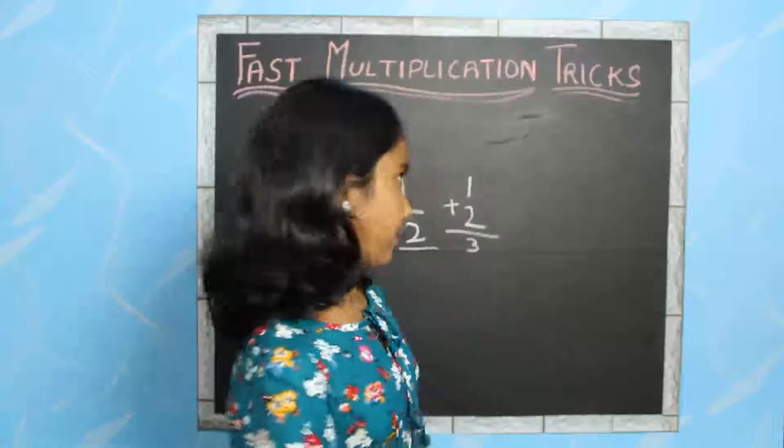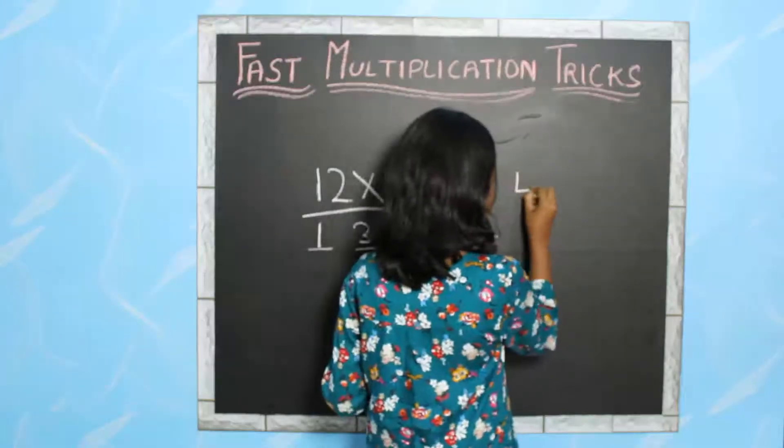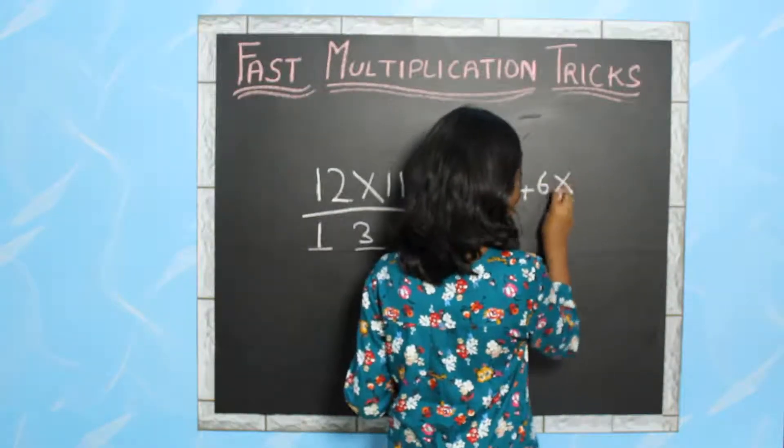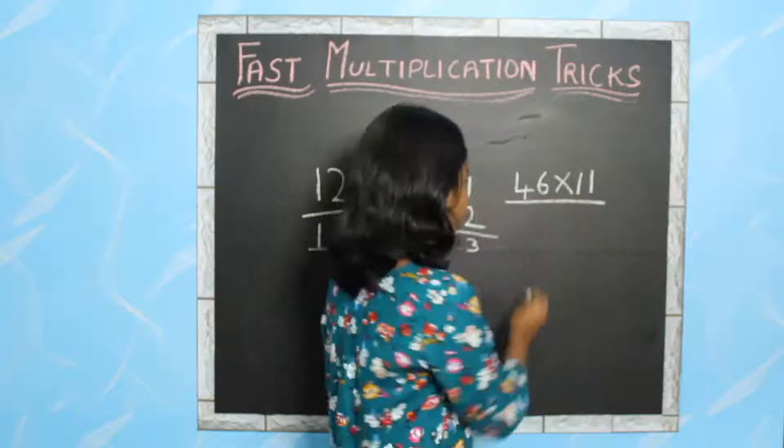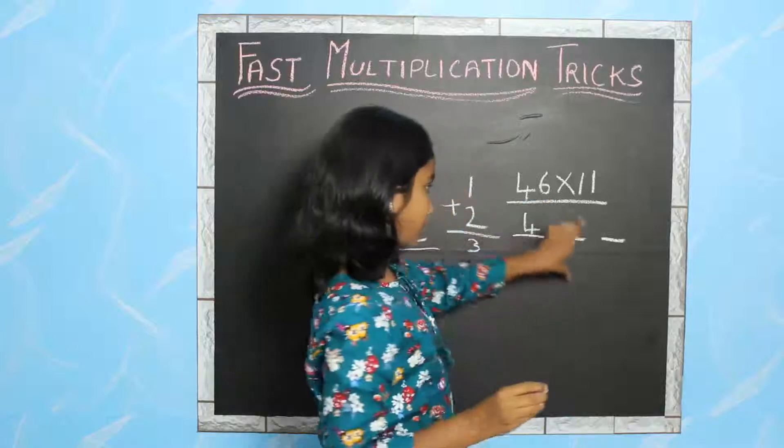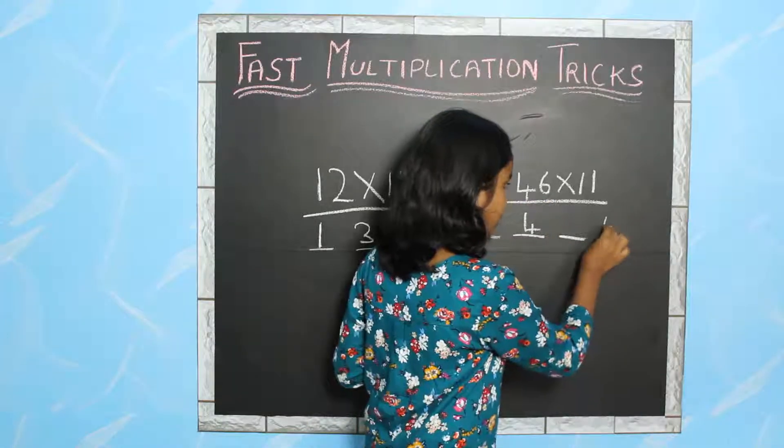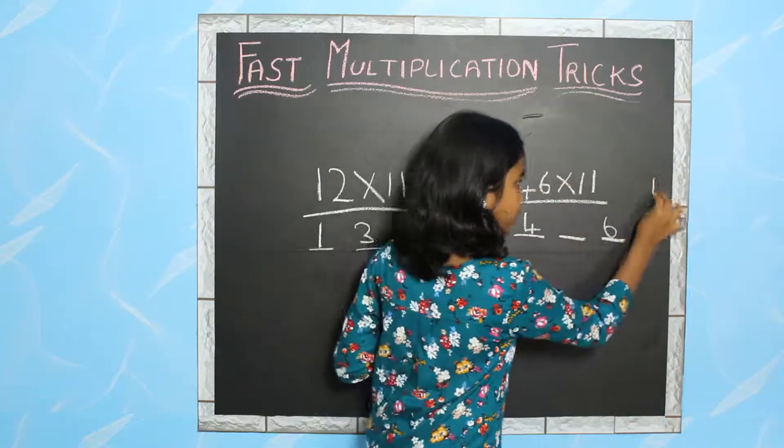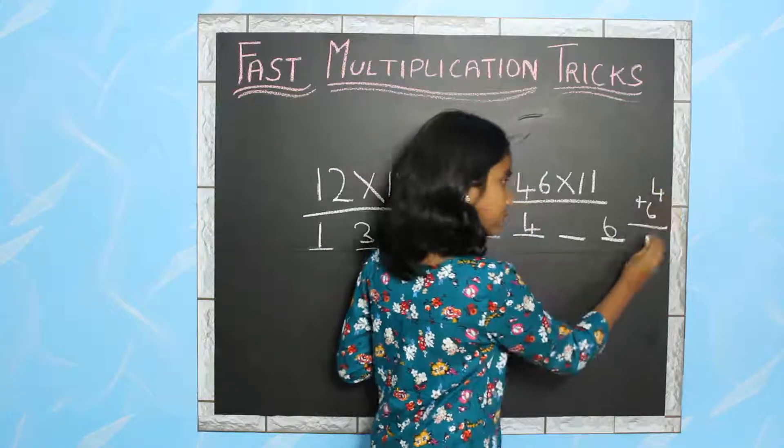Now let's take another example. 46 into 11. I am going to add 4 in the hundreds place and 6 in the ones place. Now I am going to add 4 plus 6, which is 10.